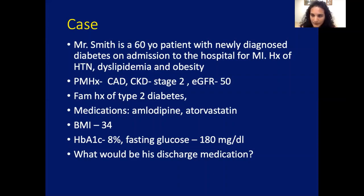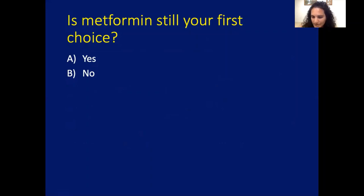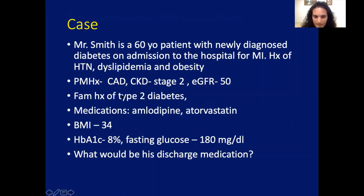Now let's change the case. Same patient, but now he comes in with newly diagnosed diabetes on admission to the hospital for a myocardial infarction. He has hypertension, dyslipidemia, and obesity. Looking in his chart, you see coronary artery stenosis, CKD stage 2, eGFR of 50. Same family history, same medications, BMI still obese, A1C 8%, fasting glucose 180 mg/dL on discharge. What would be his discharge medication? Would metformin still be your first choice given the kidney disease and heart disease?